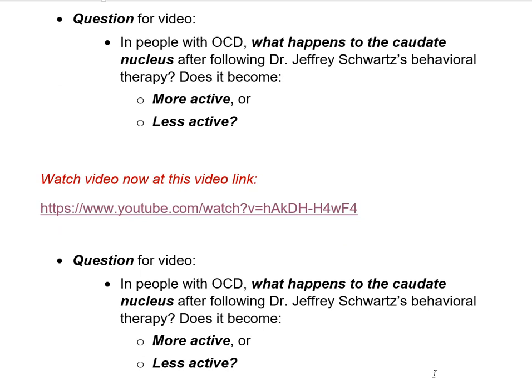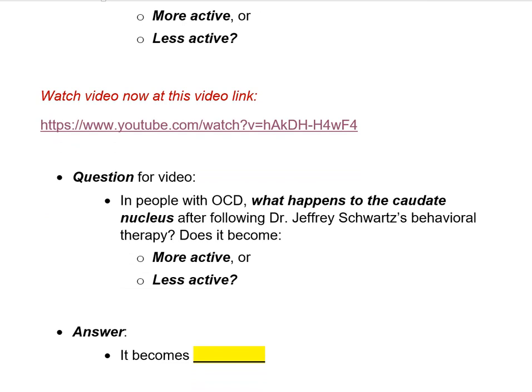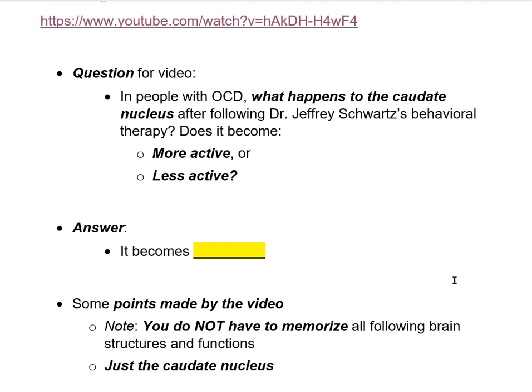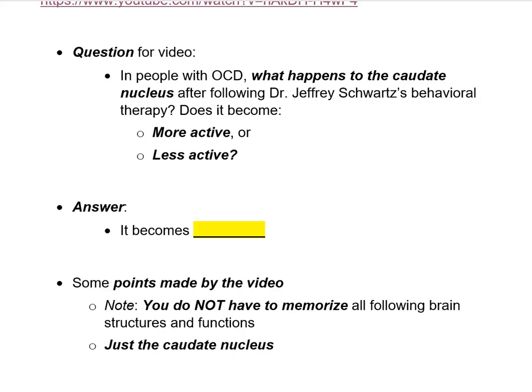Now that you've watched The Science of OCD — the question was: what happens to the caudate nucleus after following Jeffrey Schwartz's behavioral therapy? Does it become more active or less active? The answer is in the video, and I expect you to answer it. I'm not going to fill in that blank, but I do want to give you more notes. There's a lot of great information in that video, and because it comes at you fast, I want to go back and amplify some of the key points using screen captures from the video.